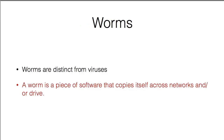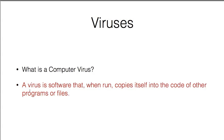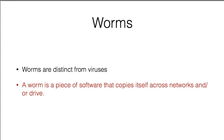Worms are distinct from viruses — TV and movies often use these terms interchangeably, but they're different. A worm is a piece of software that copies itself across networks and/or drives, whereas a virus copies itself into the code of other programs or files. Typically, if malware copies itself from one drive to another — say from a C drive to a D drive — that's a worm. If it copies itself into your System32 file, that's a virus.